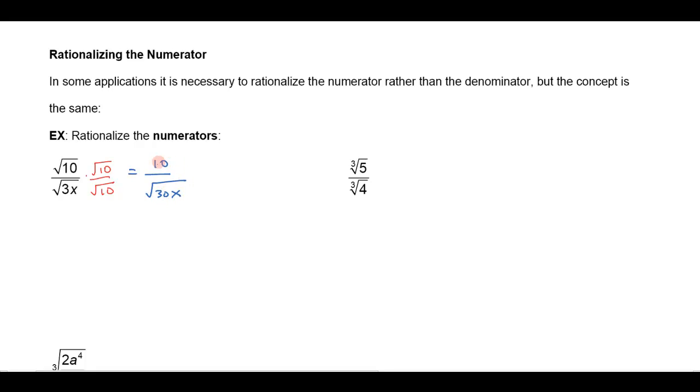So notice that as I rationalize or clean up the numerator and get rid of the radical there, then it tends to mess up the denominator more, just like it did when we were rationalizing the denominator it made the numerator a little more messy.